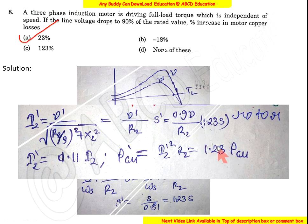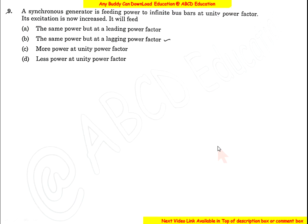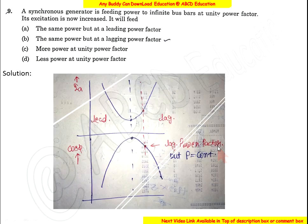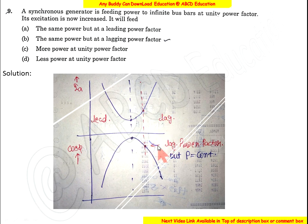Question 9: A synchronous generator is feeding power to an infinite bus bar at unity power factor. If excitation is increased, it feeds the same real power but at a lagging power factor, because increasing excitation shifts the operating point on the V-curve. The correct option is B.